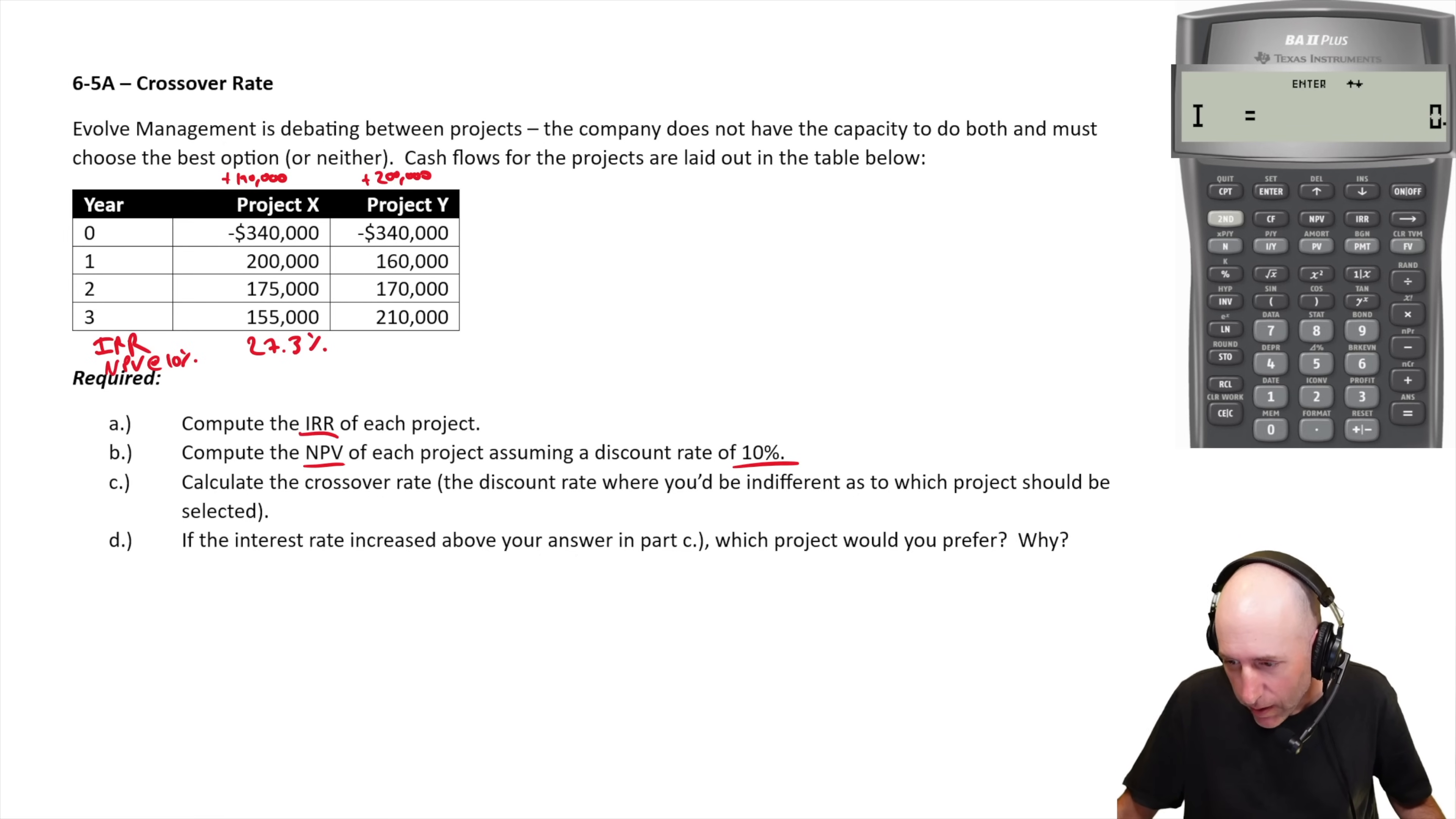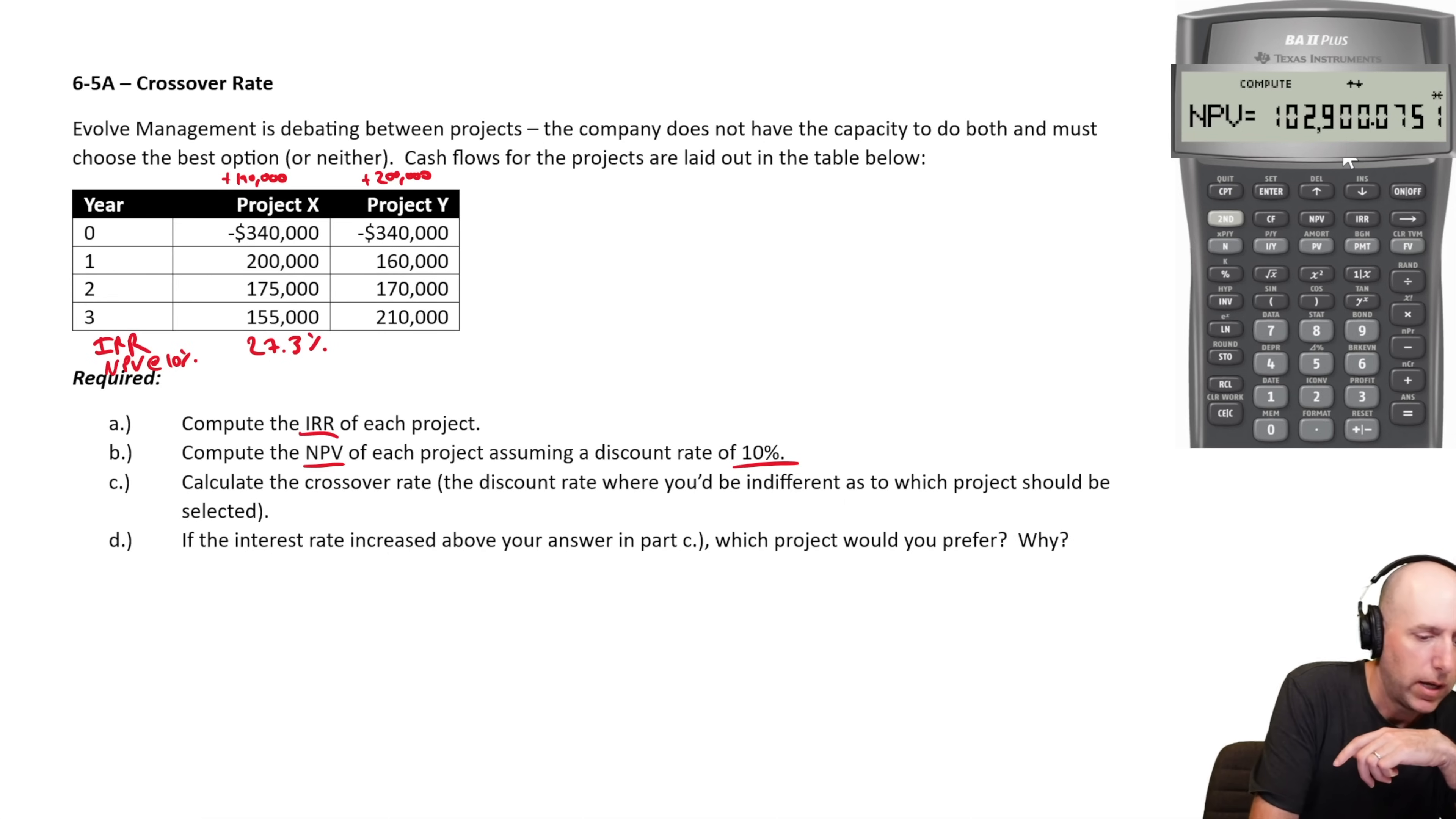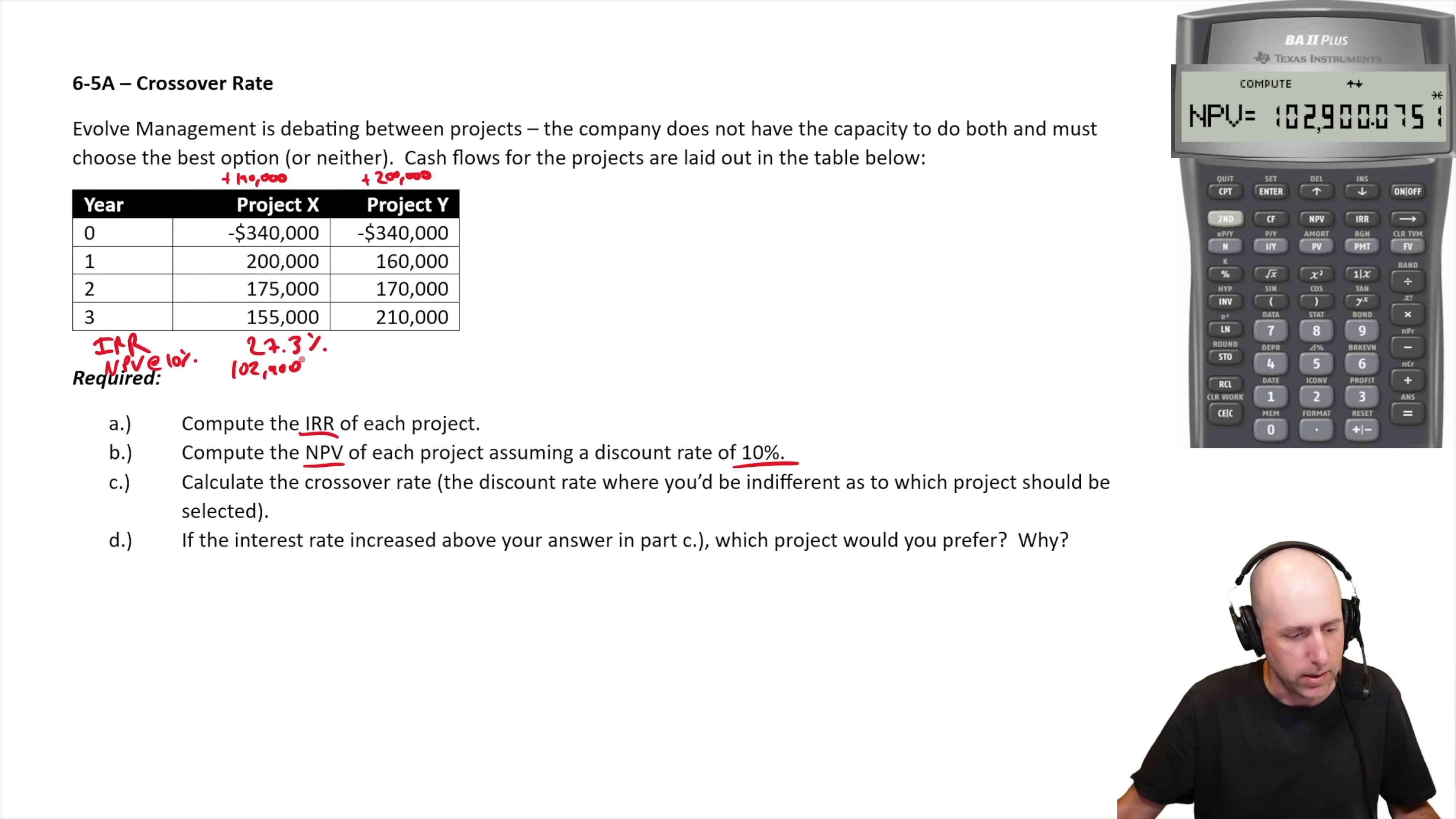If the IRR was 27% and the discount rate was 30, this would be a negative number. Let's go ahead and solve. So I go NPV, the discount rate is 10, so I put 10 in as my I. Hit the down arrow, I compute NPV, $102,900. Project X in the bag.